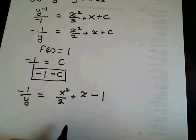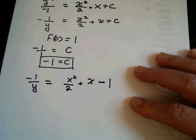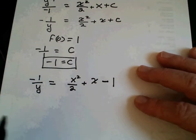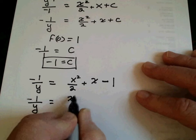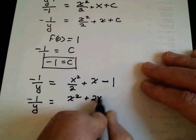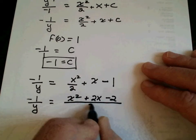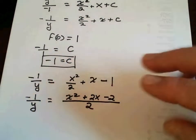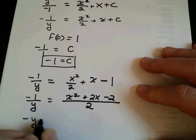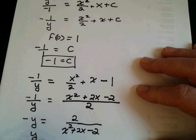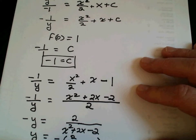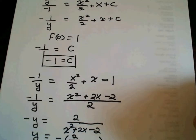Now, what I like doing when I have a fraction is getting a common denominator. So we get x squared plus 2x minus 2, the whole thing over 2. At this point it becomes easy because I can flip it: negative y equals 2 over (x squared plus 2x minus 2). Multiply both sides by negative 1, and y is equal to negative 2 over x squared plus 2x minus 2. And now we're finished.